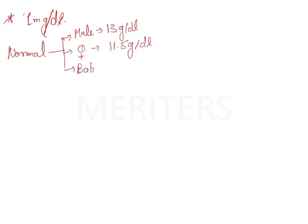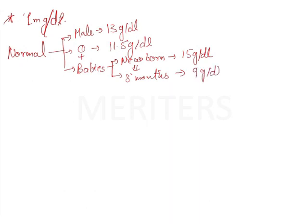For females, the lower limit is slightly lesser at 11.5 gram per deciliter. For newborn babies, who generally have high hemoglobin, the lower limit is 15 gram per deciliter. After three months of birth, the lower limit is around 9 gram per deciliter. Overall, the normal range of hemoglobin is considered to be 12 to 16 gram per deciliter.